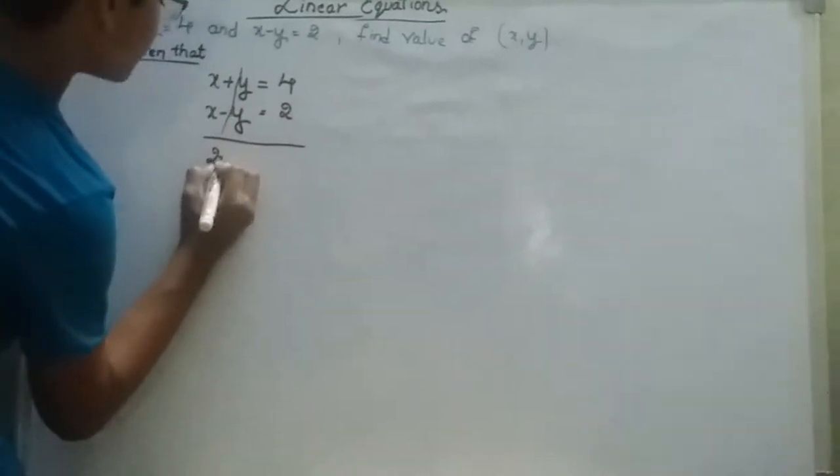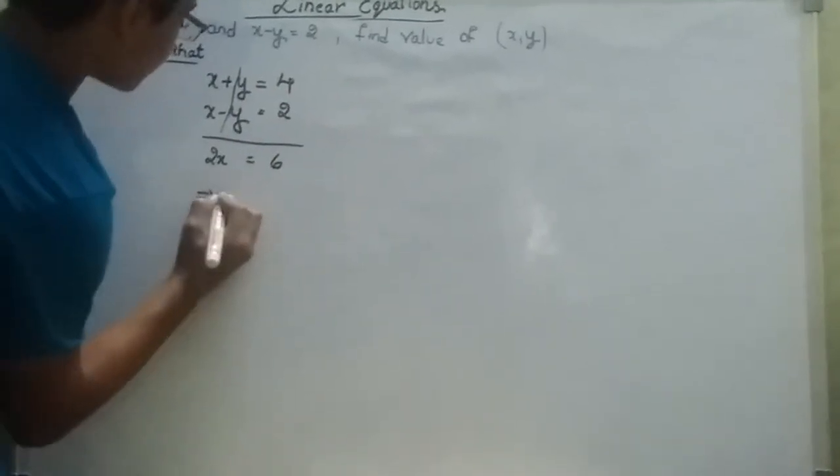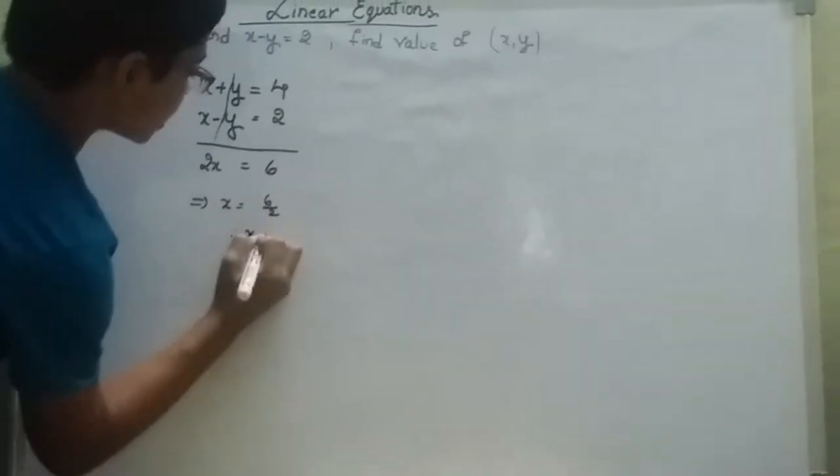X plus X is 2X, which equals 4 plus 2, which is 6. That implies X is equal to 6 divided by 2. Therefore, X is equal to 3.